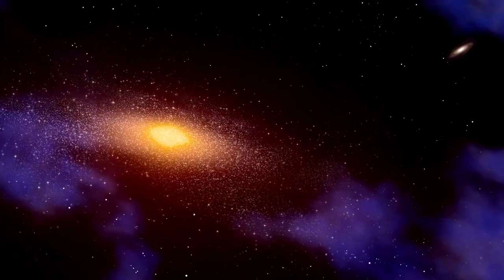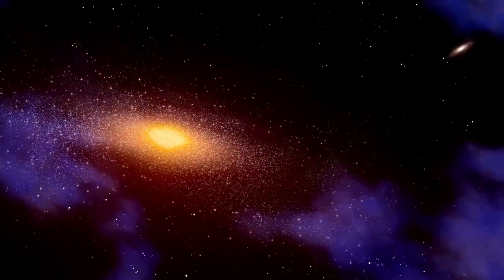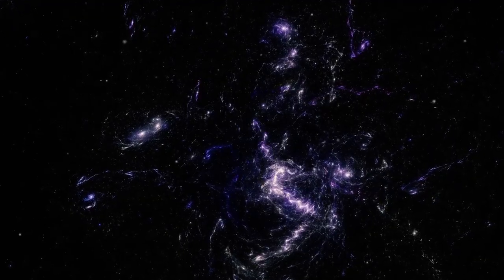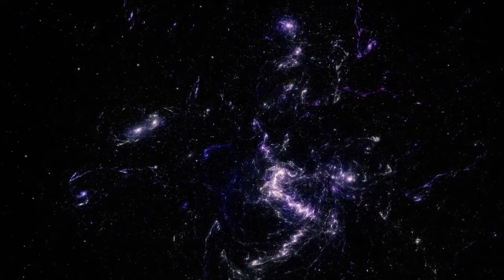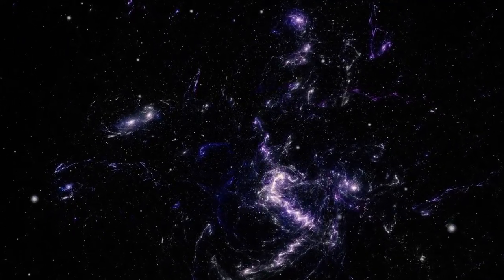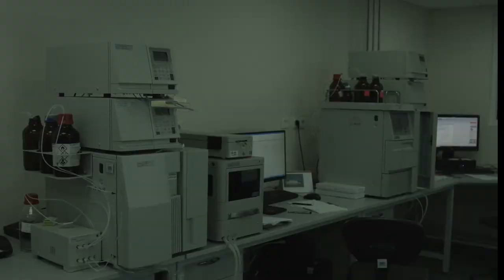For decades, scientists believed they had a clear picture of how the universe evolved. First came the Big Bang, then a Dark Age. Slowly stars began to form, then galaxies and eventually life. The further back in time we look, the simpler things should appear, just faint hydrogen clouds and scattered particles.